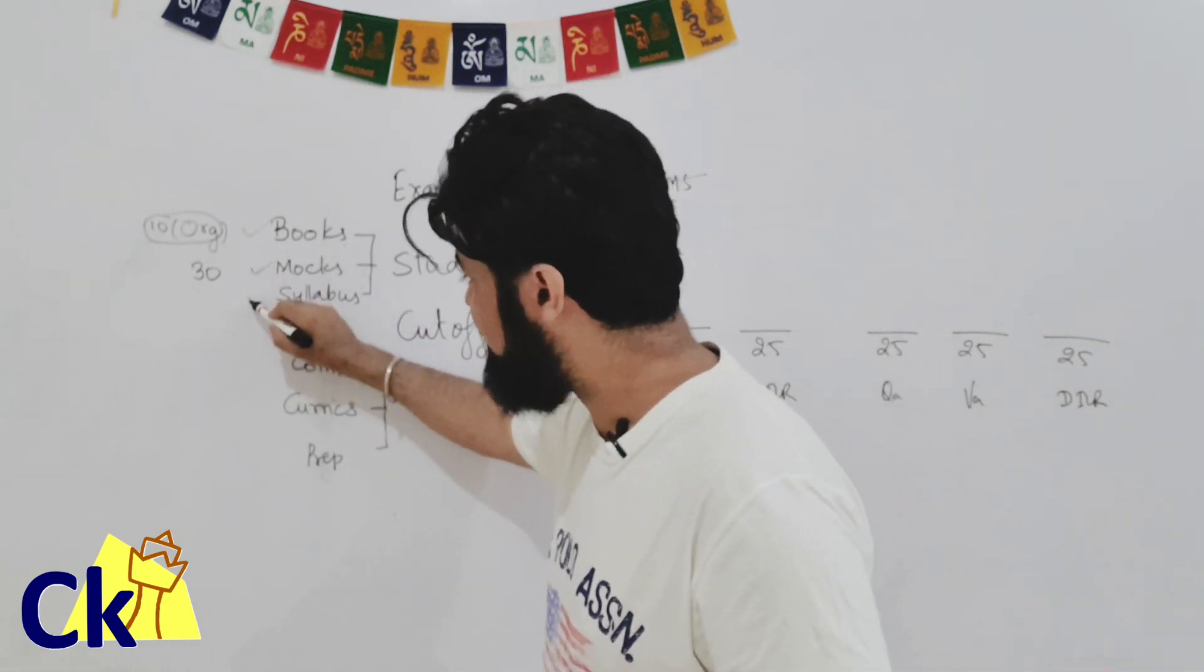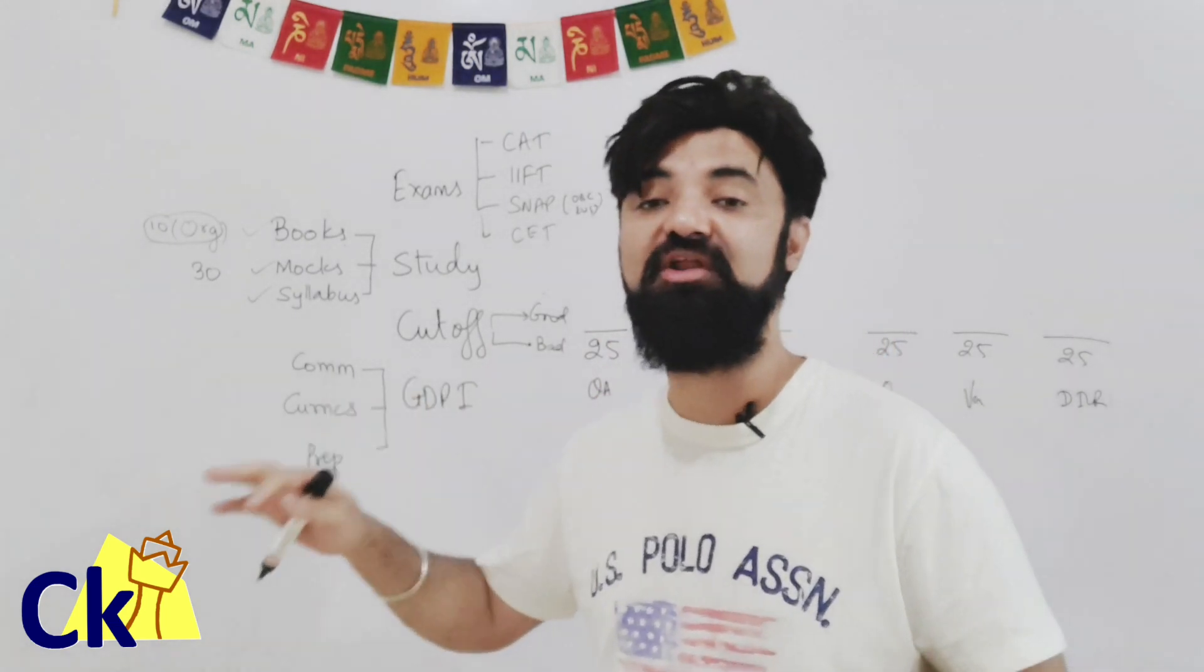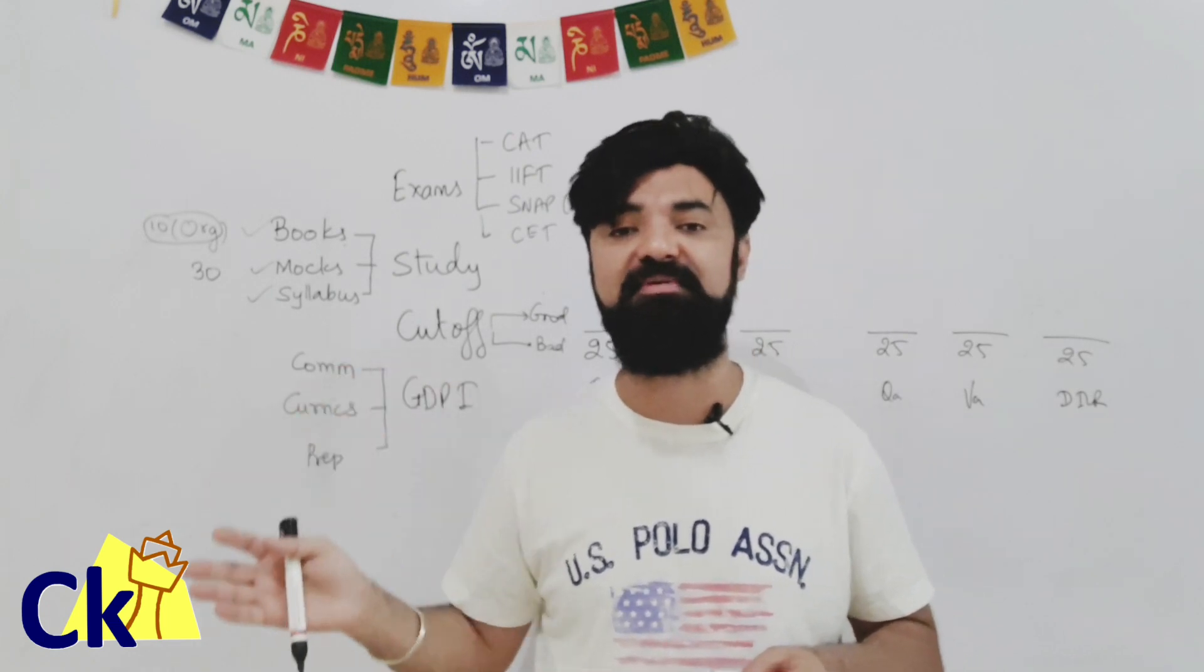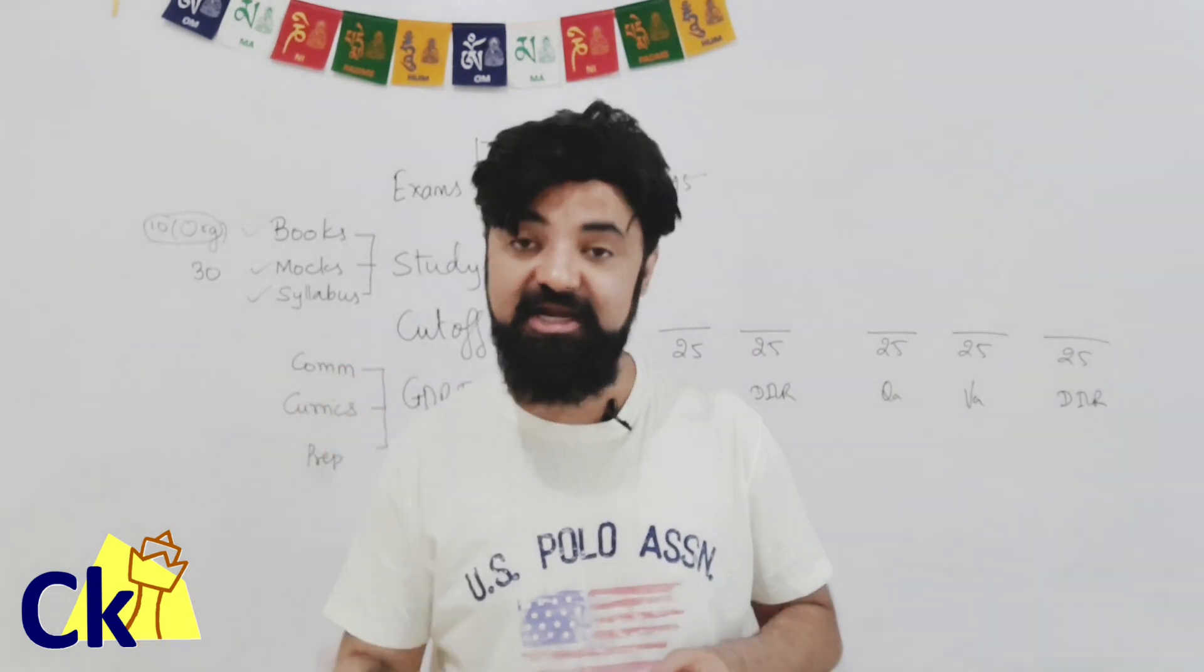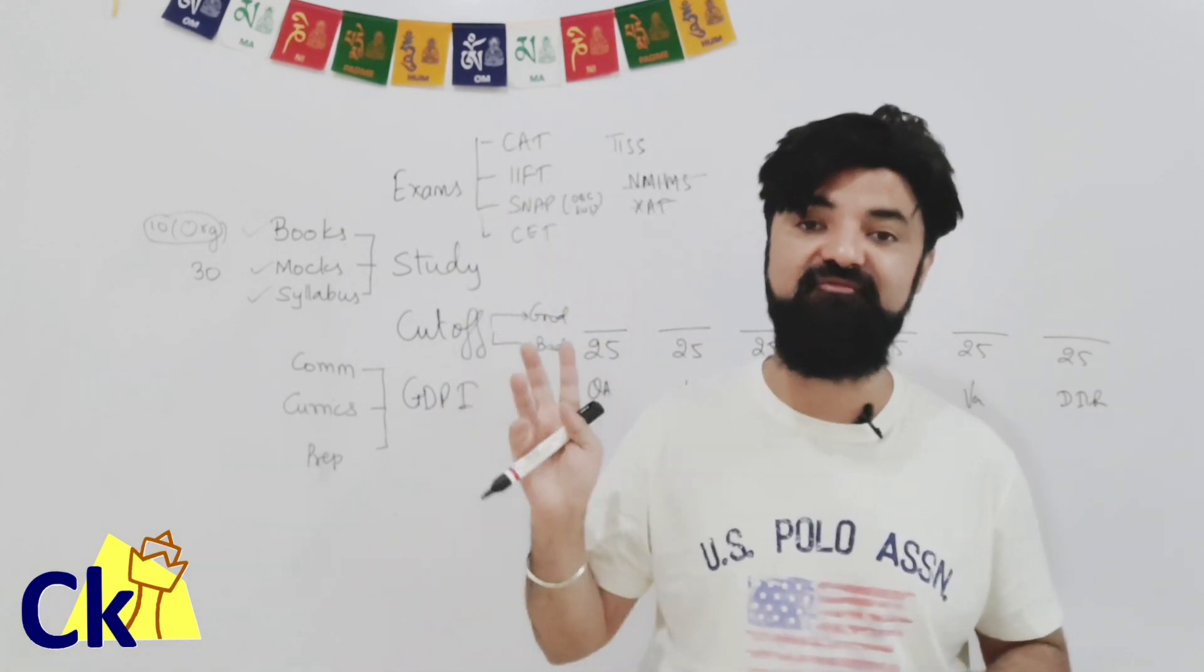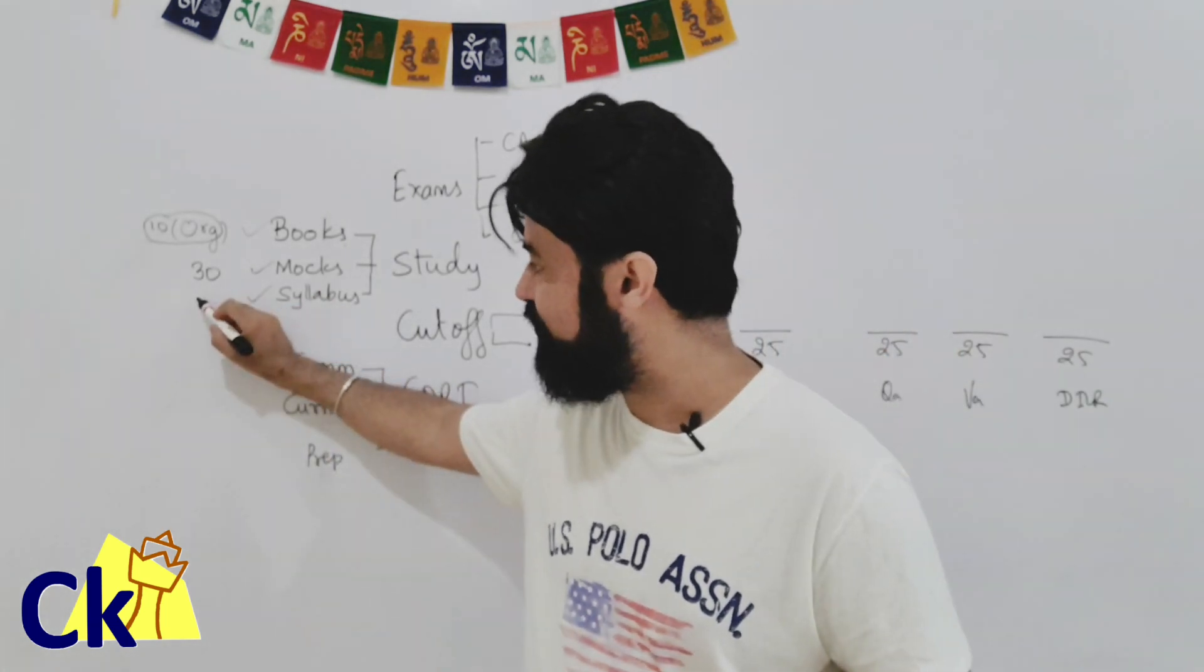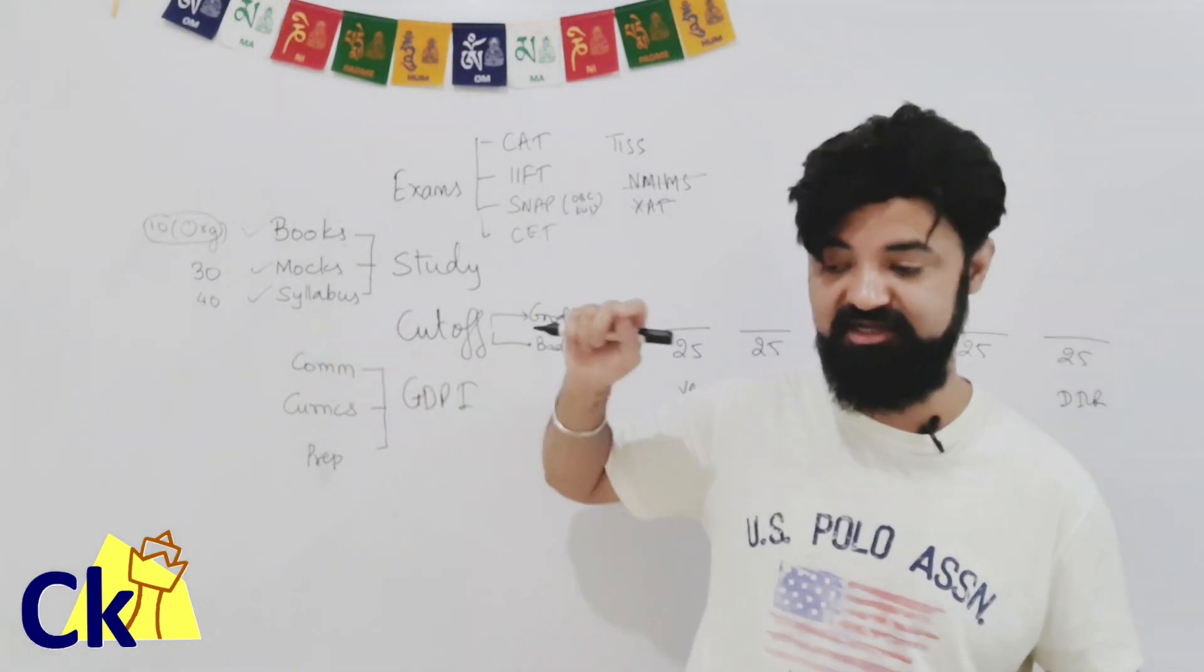Number three is syllabus. Let's talk about every topic. What people think, they try to ignore a few topics. Okay, I'm reserved category, cutoff is low, I don't need to complete the preparation. I can get away with less questions as well. No. Right now we have the time, we will study everything. Every damn topic we are going to complete. For us, there are total almost 30, 40 chapters in the CAT exam. All 40 chapters will be covered.